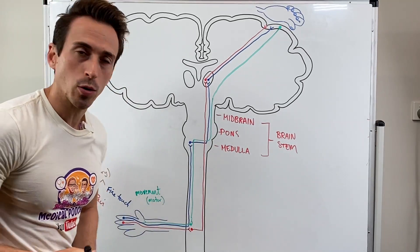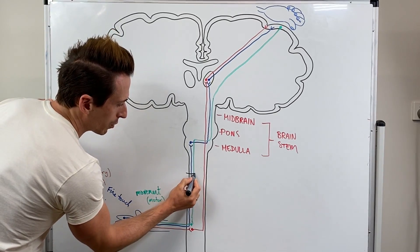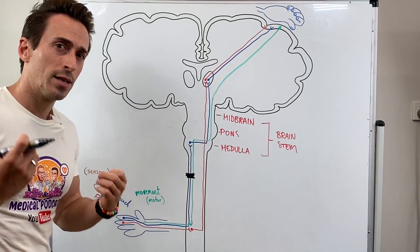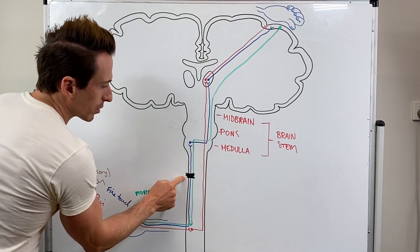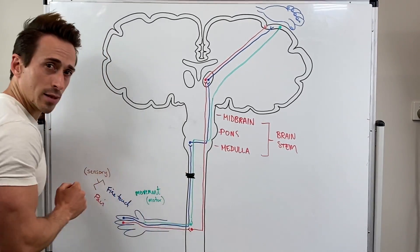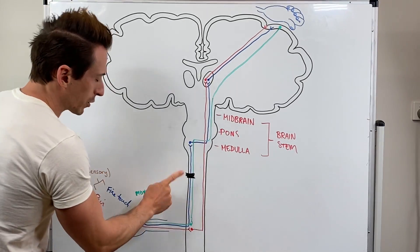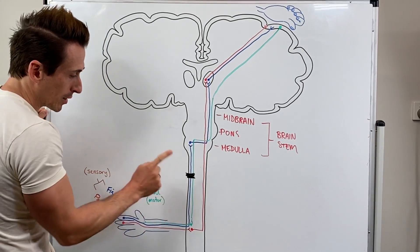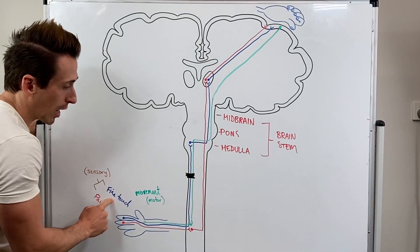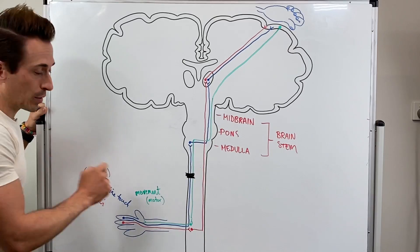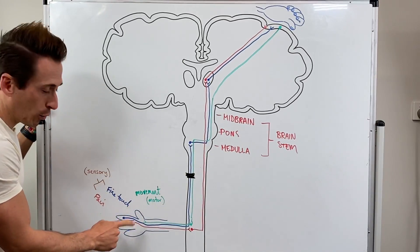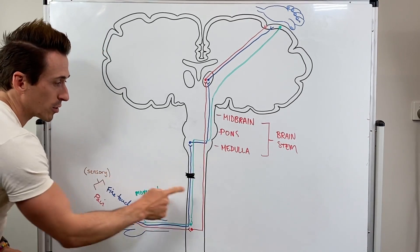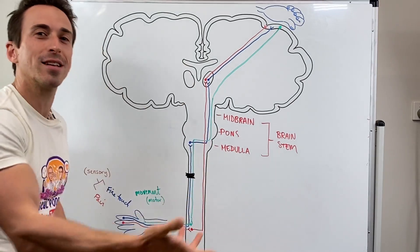Now let's talk about damage to the spinal cord. Say somebody suffers damage to one particular side of the spinal cord. Because of the way the pathways are arranged, it's easy to see what deficits arise. On the same side as the lesion, below the level of damage, there will be problems with fine touch and motor movement. That hand may not be able to move and may not be able to feel fine touch. However, if you put an ice cube on it or prick it, you would still be able to feel pain and temperature, because that pathway travels up the other side of the spinal cord.